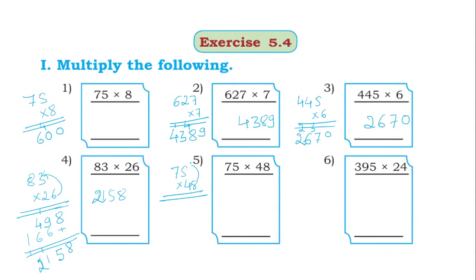Next, 75 into 48. 8 fives are 40, put 0 in unit place, carry 4. 8 sevens are 56, 56 plus 4, 60. 4 fives are 20, put 0, carry 2. 4 sevens are 28, 28 plus 2, 30. Add all these. 0 plus 0, 6 plus 0 means 6, 3. This is 3,600.